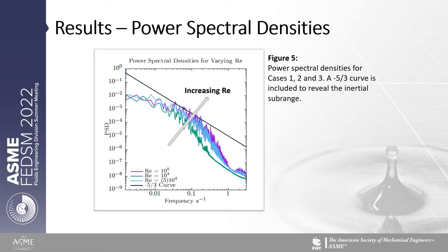Power spectral densities were computed for Reynolds numbers of 10,000, 50,000, and 100,000 using streamwise velocity fluctuation signals probed at a single point in the cavity at a sampling rate of 20. A mesh resolution of 200 cubed is used for all three cases. As the Reynolds number increases, the inertial subrange — the region of constant minus 5/3 slope on the curves — is seen to increase. This region is found between 0.03 and around 0.08 Hz for Reynolds number 10,000, and between 0.03 and around 0.3 Hz for Reynolds number 100,000, an increase from around half a decade to a whole decade.